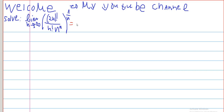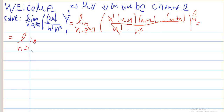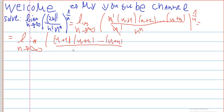This equals a limit as n goes to infinity, and we will rewrite 2n factorial as n factorial times n plus 1 times n plus 2, up to n plus n, everything divided by n factorial times n to the n, everything raised to the power of 1 over n. Writing 2n factorial like this, we can cancel out n factorial, and we are left with the limit as n approaches infinity of n plus 1 times n plus 2 up to n plus n, all divided by n to the n, raised to the power of 1 over n.